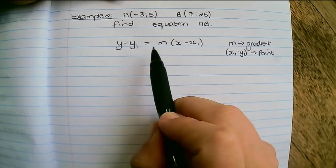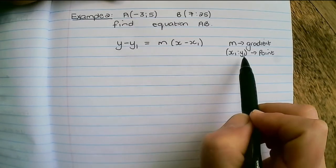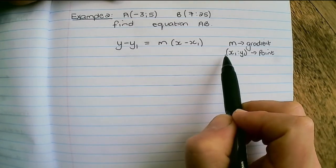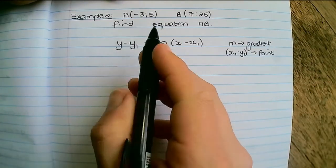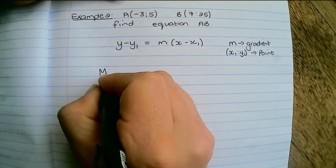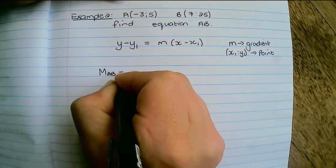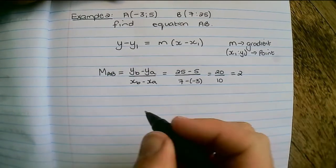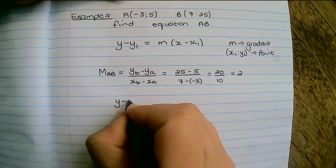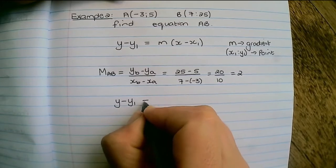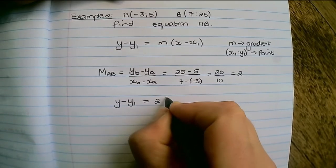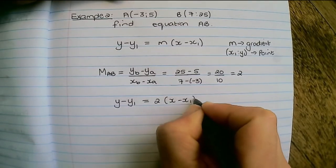So as before we can find the gradient of line AB which is still equal to 2. Therefore we have y minus y1 equals the gradient times x minus x1.